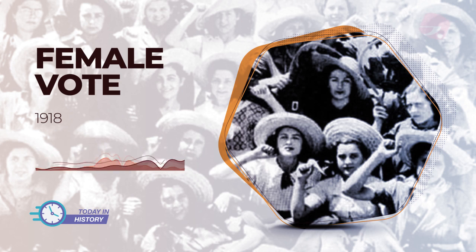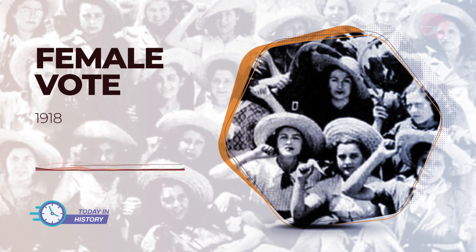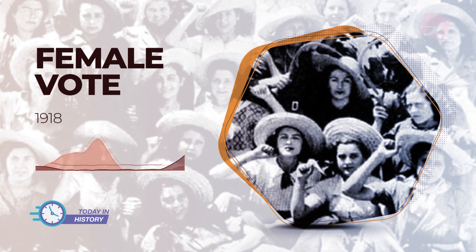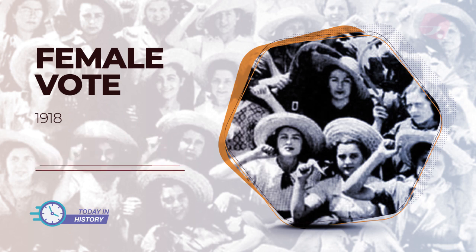That same year, it was implemented in Venezuela. In 1949, it was the turn of Chile and Costa Rica. In Mexico, in 1935, the United Women's Rights Front was formed; however, the female vote was only won in 1953. In 1961, it was Paraguay's turn.